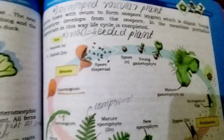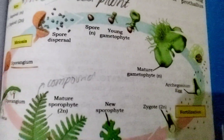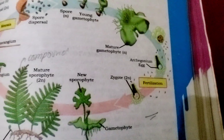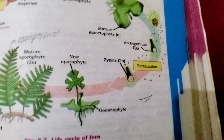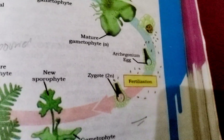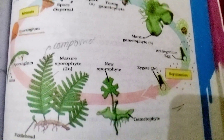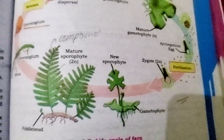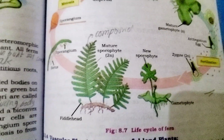The sporangium produces spores, then the young gametophyte forms, followed by the mature gametophyte. Then archegonium and antheridium are involved, with sperm moving through water to the archegonium. Fertilization occurs, the zygote develops, and then the new sporophyte body is formed.